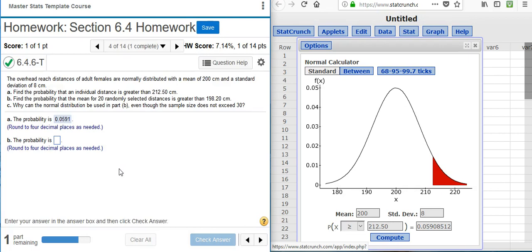Now Part B asks, find the probability that the mean for 20 randomly selected distances is greater than 198.2 centimeters.